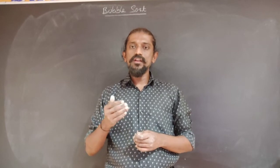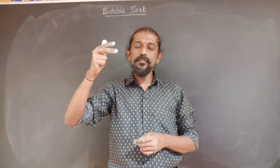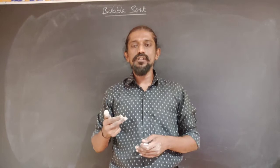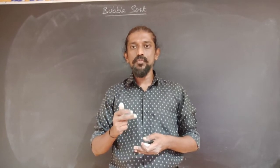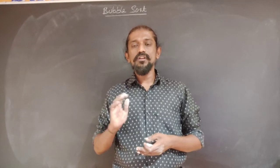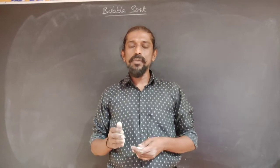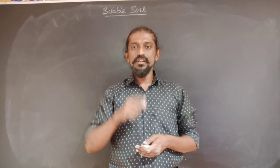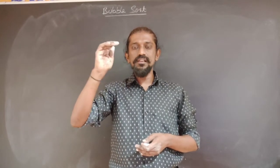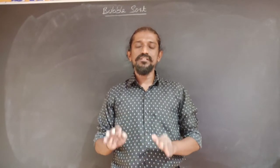We do this by starting with the first two elements, comparing and swapping if necessary, then second and third, third and fourth, fourth and fifth, and we end after comparing the element at position n-1 with the element at position n. This is called one pass of bubble sort. After one pass, the largest element in the list will have bubbled from whatever position it was in to the last position, which is its final sorted position.